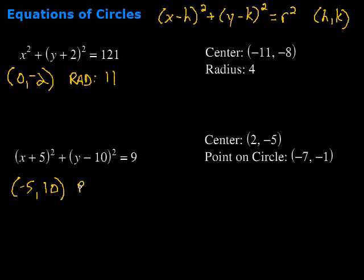Then we need to find the radius. Remember, the radius is right here squared, so I have to take the square root of that. The square root of nine would be three, so my radius is three. To graph this, I would first go to the point negative five, ten, then go three in each direction from that center, and connect the dots, and I've got my circle.